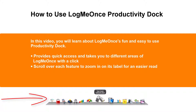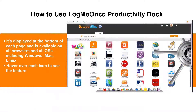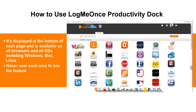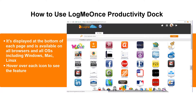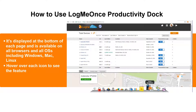Scroll over each feature to zoom in on its label for an easier read. It's displayed at the bottom of each page and is available on all browsers and OSes, including Windows, Macs, and Linux. Hover over each icon to see the feature.